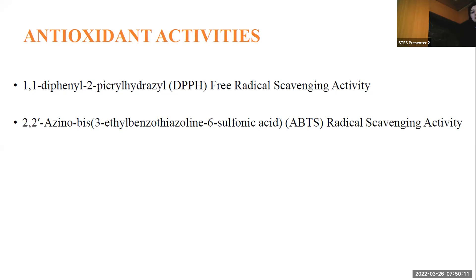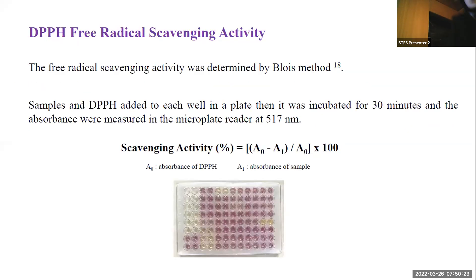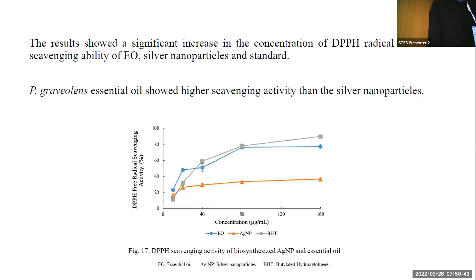Antioxidant activity was assessed using DPPH (1,1-diphenyl-2-picrylhydrazyl) free radical scavenging activity and ABTS (2,2'-azino-bis-3-ethylbenzothiazoline-6-sulfonic acid) radical scavenging activity. DPPH free radical scavenging activity was determined by the Lois method. Samples were prepared and DPPH was added to wells in a plate. The plate was incubated and absorbance was measured in a microplate reader. The scavenging activity was calculated using equations. Due to the fact that silver nanoparticles lose electrons, their DPPH scavenging activity is lower compared to essential oil.